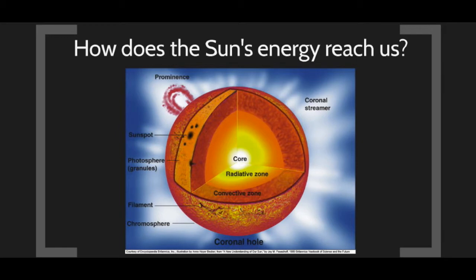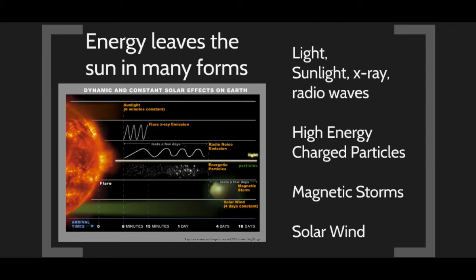It takes about 100,000 years for a photon to bounce around and work its way out of the radiative zone into the convective zone. Once in the convective zone, pressure and density are reduced enough that photons recombine with atoms, exciting them and giving them kinetic energy. Heat is then carried through convection to the surface — the photosphere. It takes only a few days to pass through the convective zone, and just eight minutes to reach us once the light leaves the Sun.